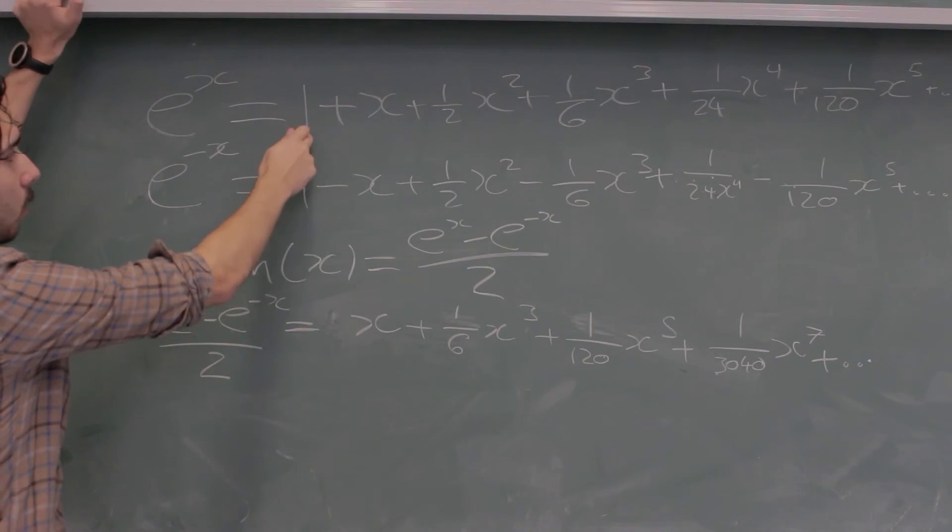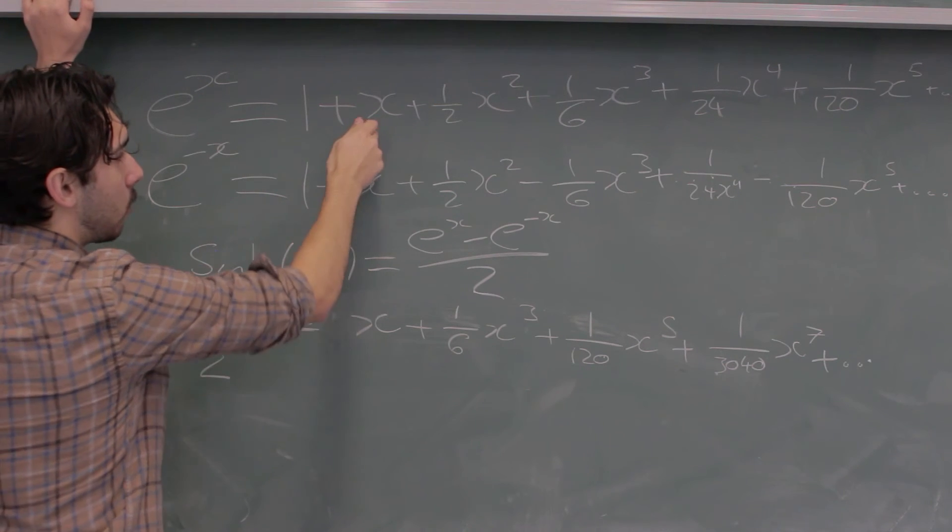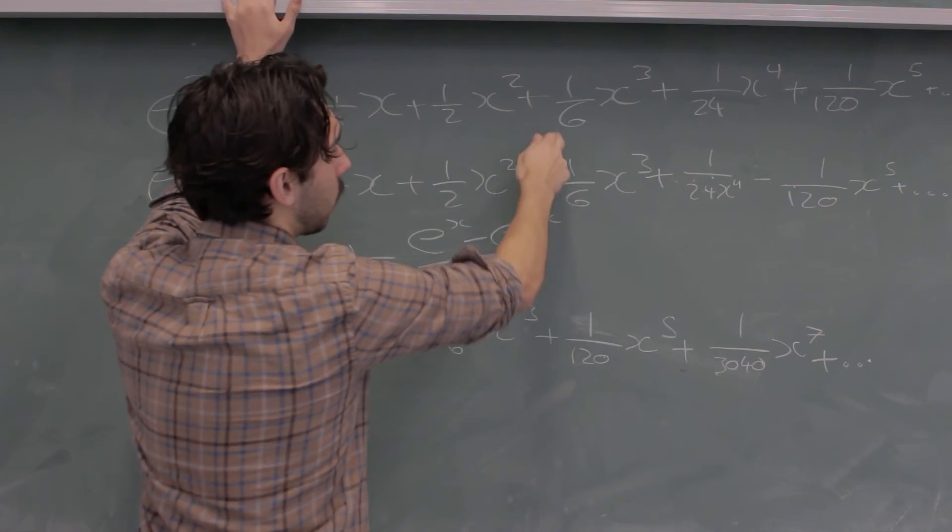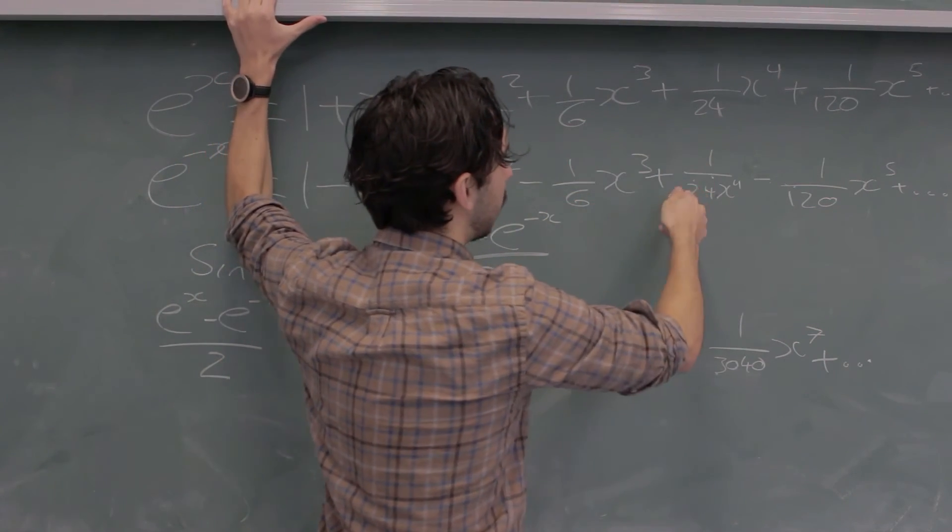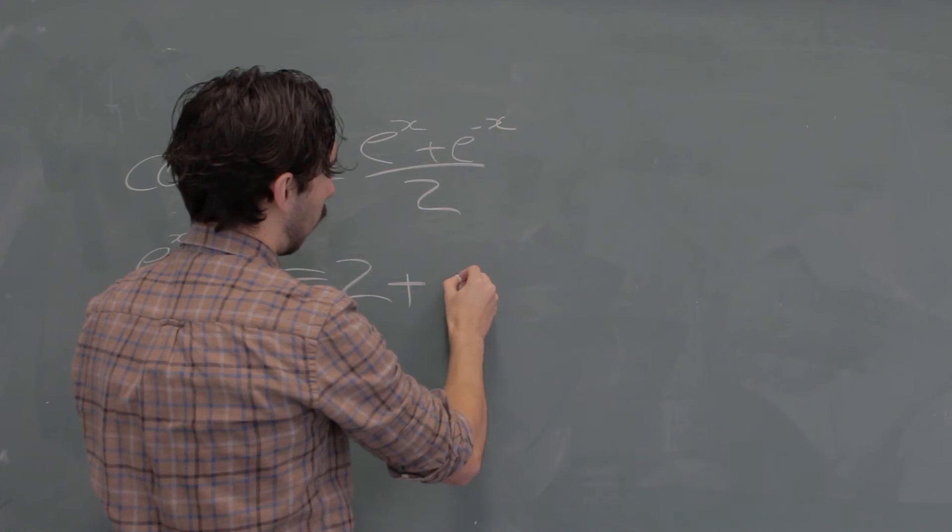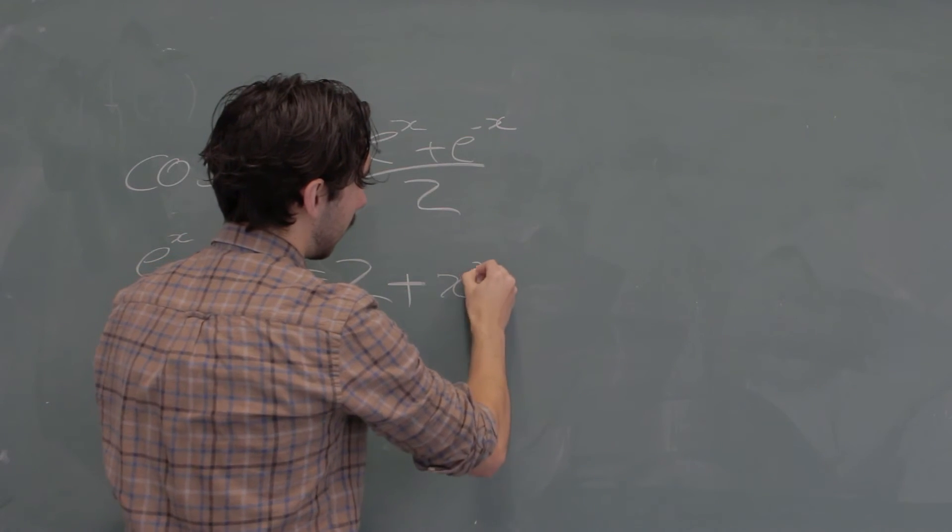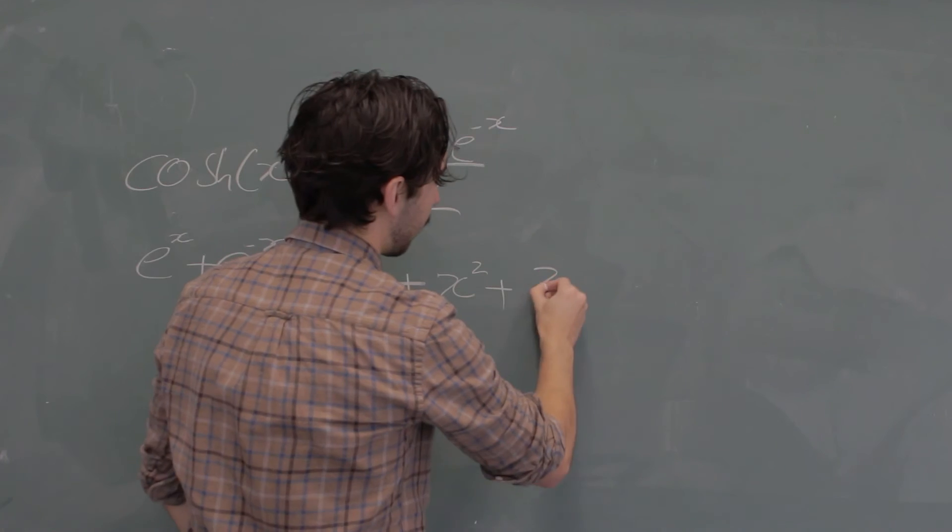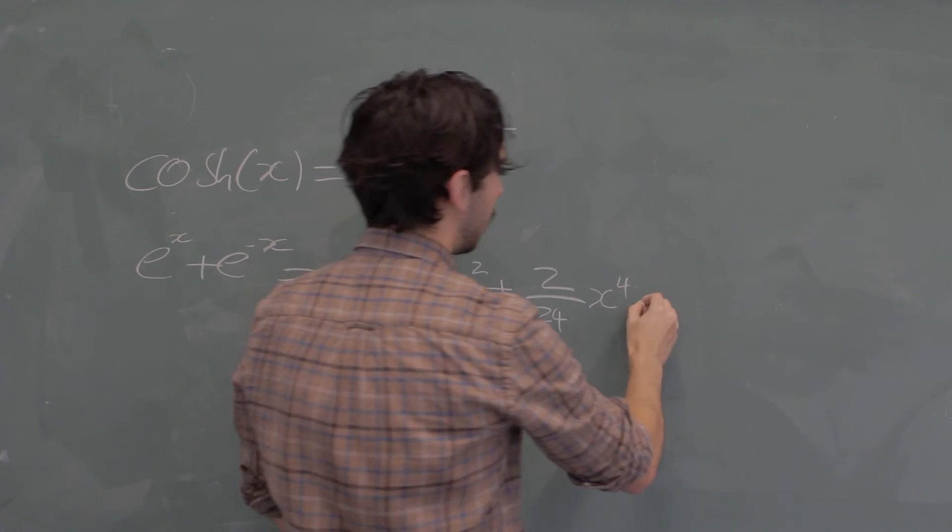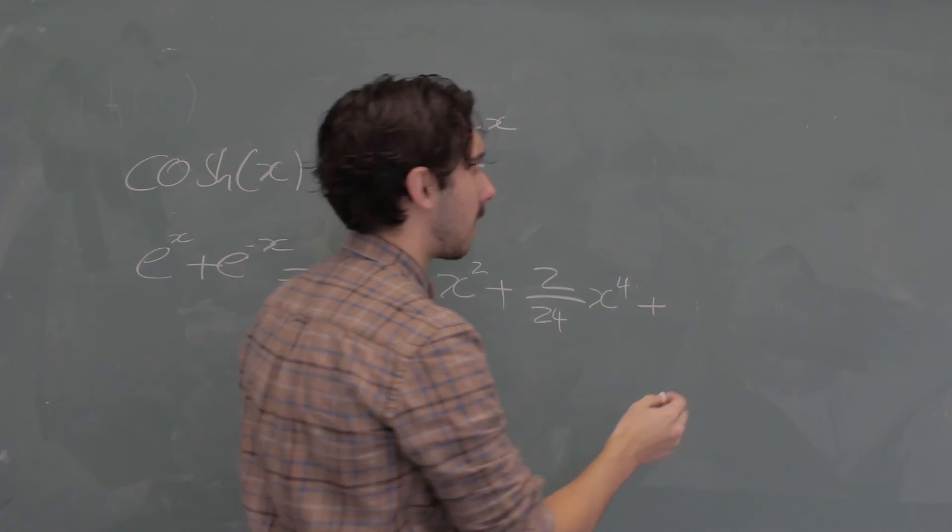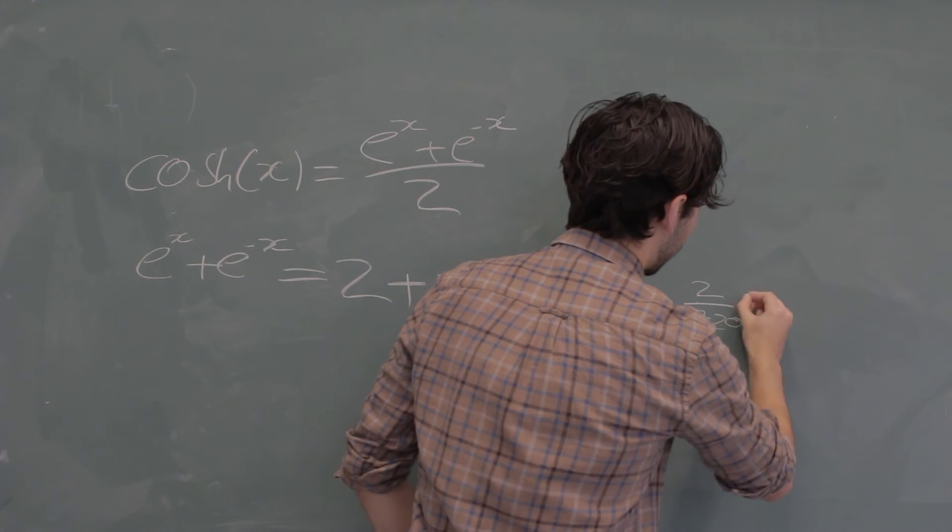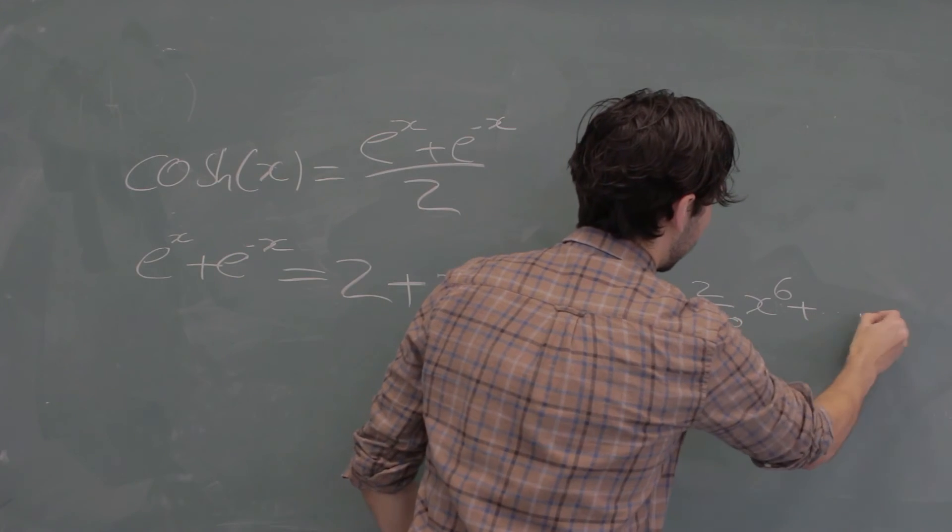So the 1 and the 1 will add up, the x, they will cancel, these will add up, so we'll get 1x squared, these will cancel, these will add, so we'll get 2 over 24x to the 4, etc. So this is 2 plus 1x squared plus 2 over 24x to the 4. The next term would be 6 factorial is 720, so it'd be 2 over 720x to the power of 6, etc.